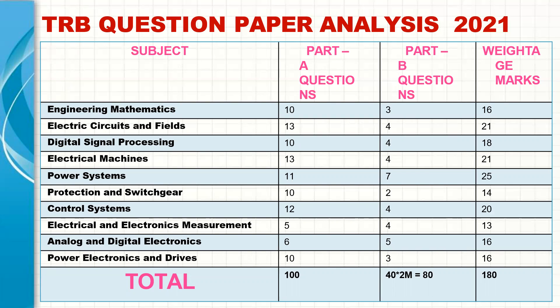Power Systems overall carries 39 marks — 21 one-mark questions and 9 two-mark questions from power system and protection/switchgear combined. Control Systems has 12 one-mark and 4 two-mark questions. Electrical and Electronic Measurements has 5 one-mark and 4 two-mark questions, totaling 13 marks. Analog and Digital Electronics carries 16 marks (6 one-mark, 5 two-mark). Power Electronics and Drives totals 18 marks (10 one-mark, 3 two-mark questions).